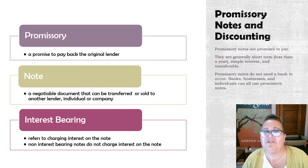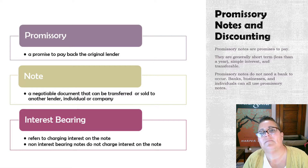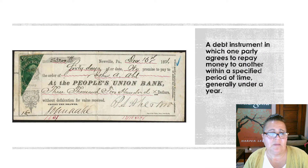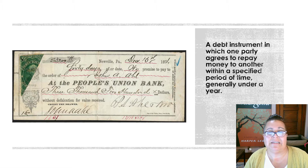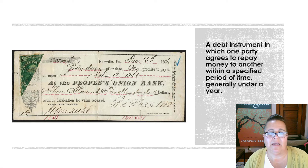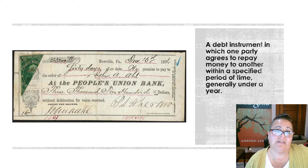Interest bearing versus non-interest bearing: basically, your mom might not charge you interest, but the people you bought a pizza oven from might. Here's an example of a promissory note — this particular image is from 1871. So promissory notes are not something brand new to banking; they've been around for at least 150 years. All of the pieces of information on this promissory note are still present on promissory notes today.